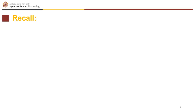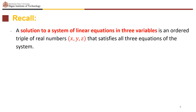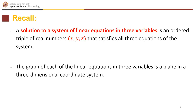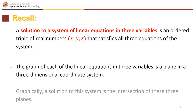Recall that a solution to a system of linear equations in three variables is an ordered triple of real numbers (x, y, z) that satisfies all three equations. The graph of a linear equation in three variables is a plane in a three-dimensional coordinate system. Graphically, a solution to this system is the intersection of these three planes.